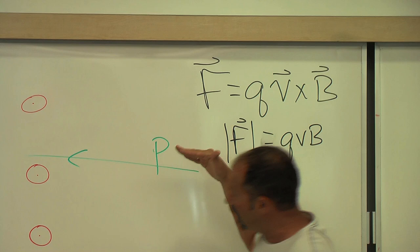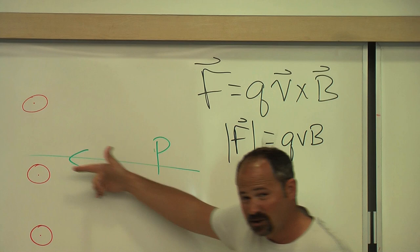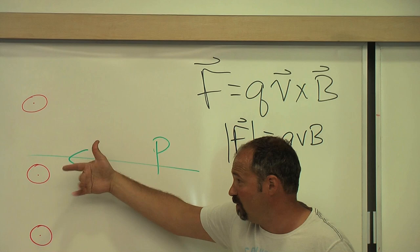Now, what direction will it turn? That's given by the right-hand rule. We take our finger, index finger for the direction of the particle. Fingers point to the direction of the magnetic field, and therefore the force is upward.